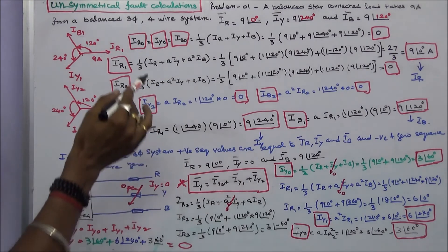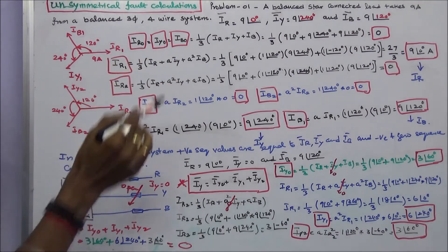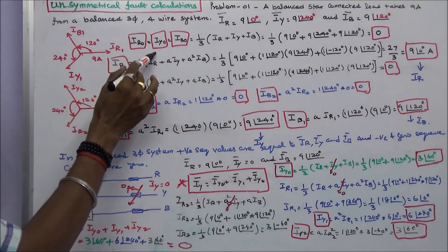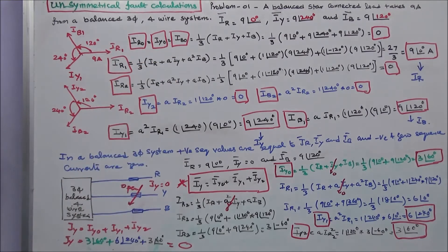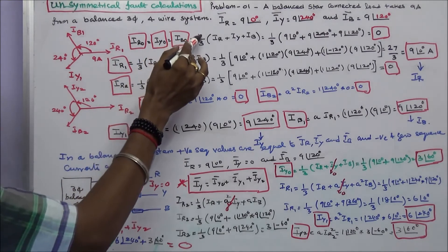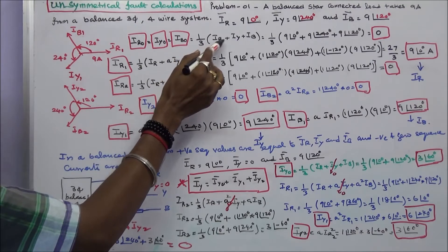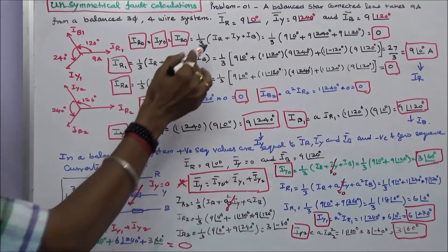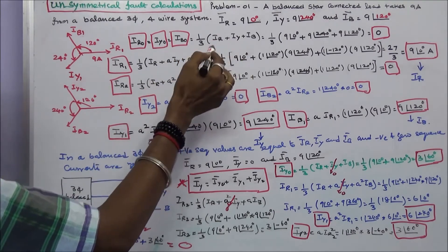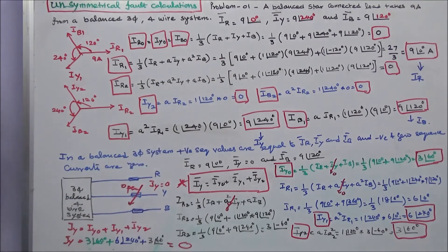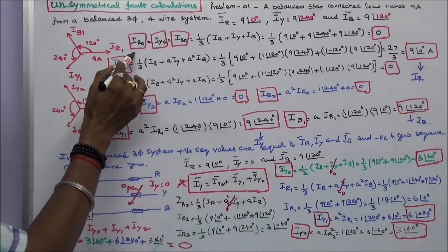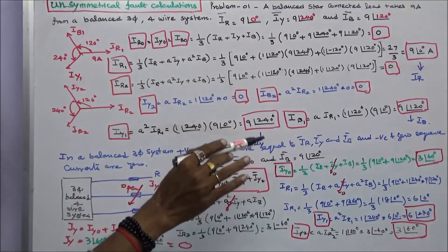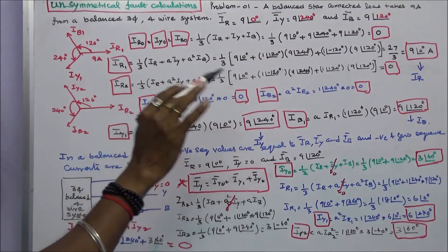First, we will calculate the zero sequence currents. IR0 is equal to IY0 is equal to IB0. The formula is 1/3 into (IR plus IY plus IB). Substituting IR, IY, and IB in this equation, we get IR0 is equal to IY0 is equal to IB0 is equal to zero. Zero sequence current is zero.